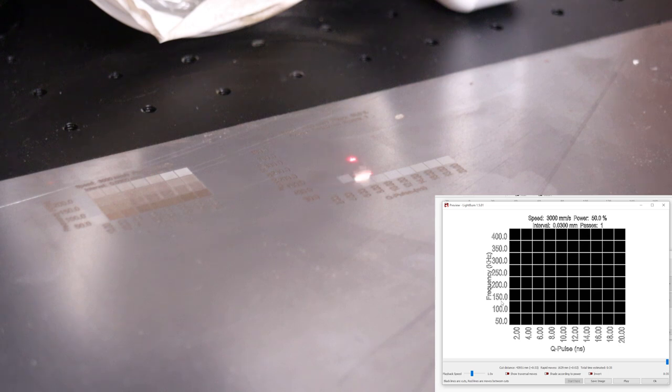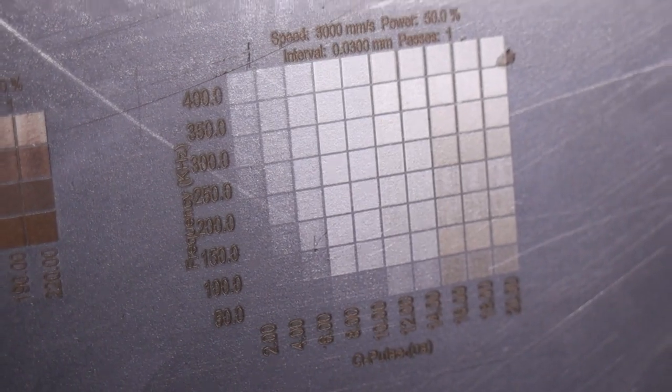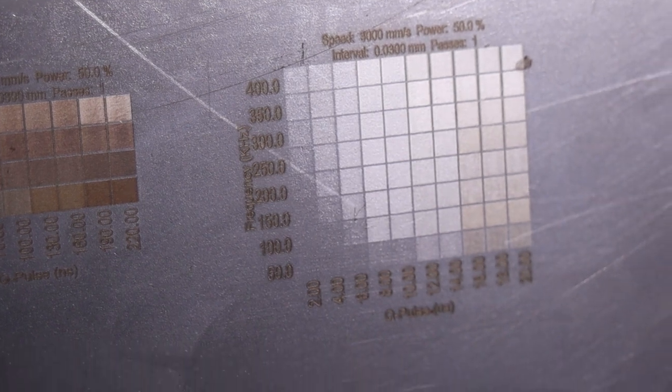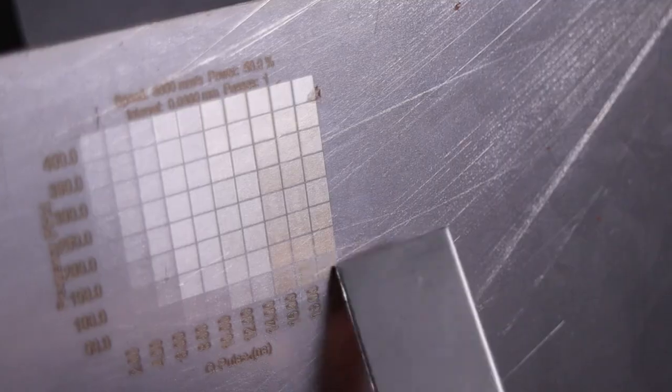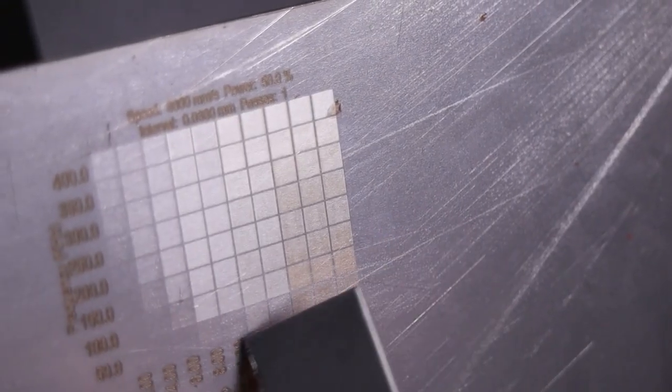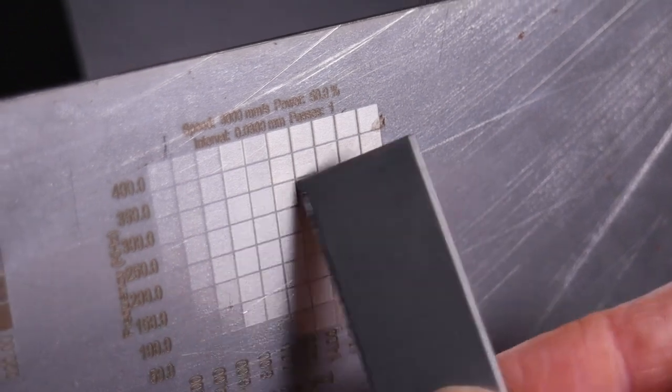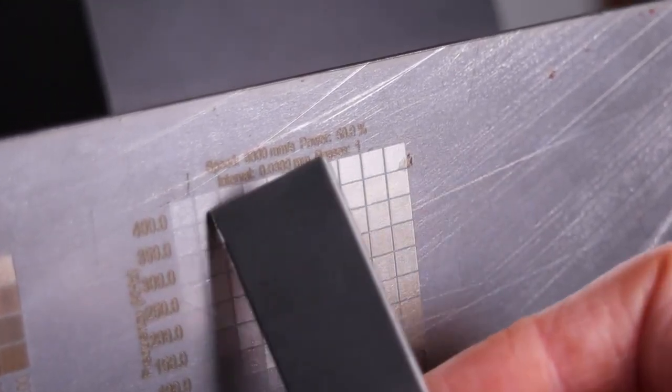I will repeat this test with lower Q-pulse values, as they seem to produce some interesting results. Listening to the sound, we can hear that as you increase either the frequency or the pulse width, the engraving sounds louder. Lower Q-pulse widths are producing a polishing effect. The lower frequencies have produced very shallow engravings, and at high frequencies, the engravings are much deeper as more pulses were generated.